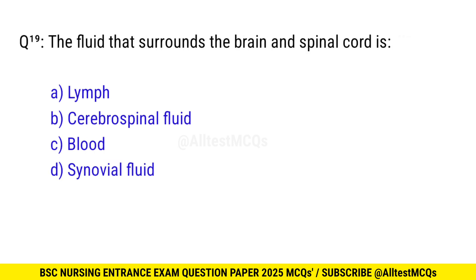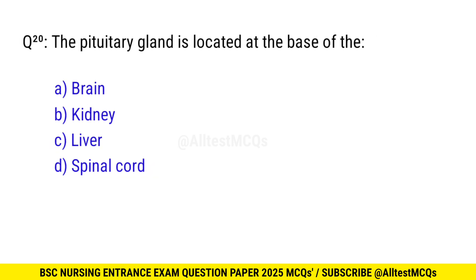Question No. 19: The fluid that surrounds the brain and spinal cord is? The right option is D: Cerebrospinal fluid. Question No. 20: The pituitary gland is located at the base of the? The correct option is A: Brain.